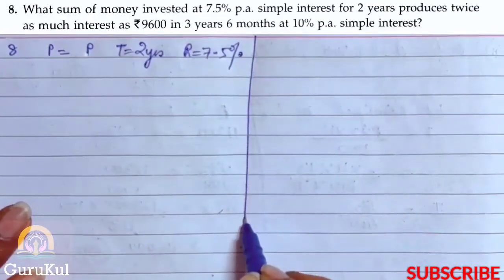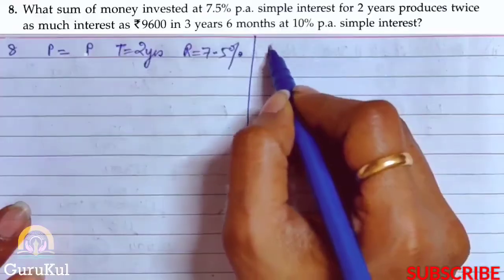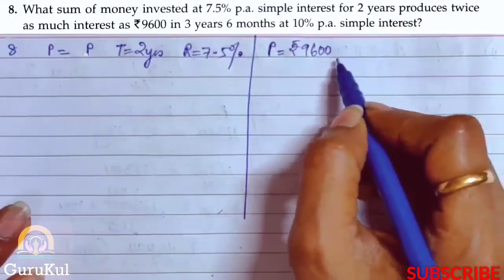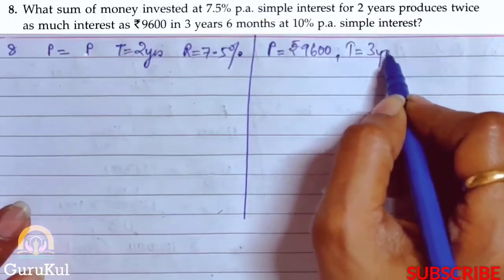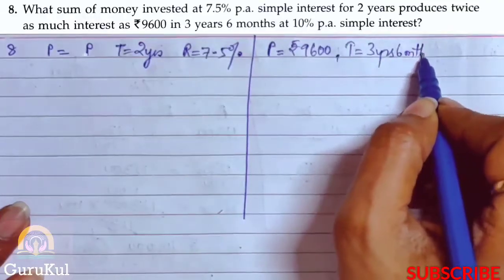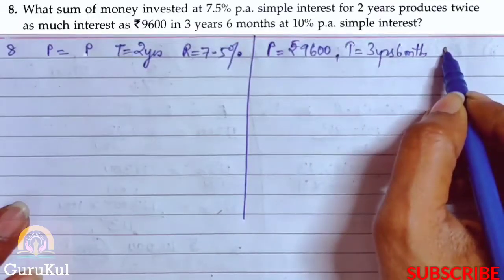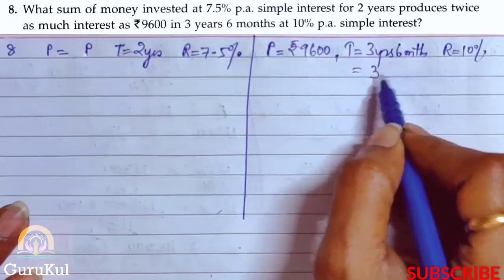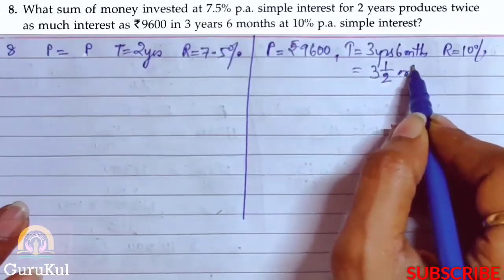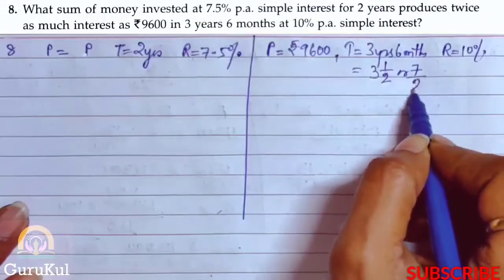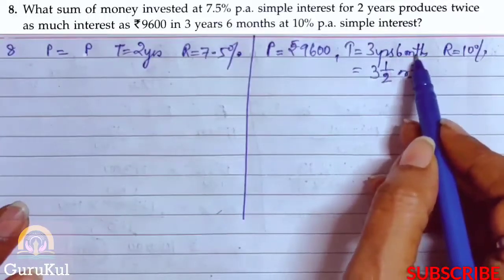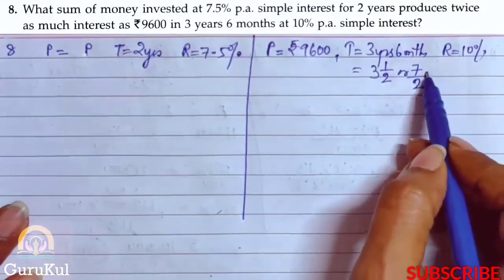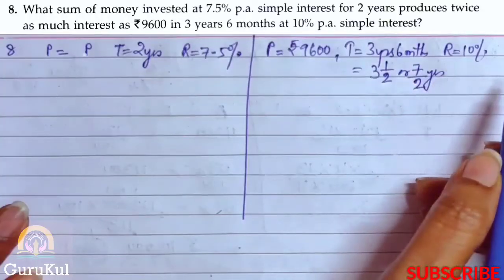In the second case, P = Rs. 9,600. Time = 3 years 6 months, Rate = 10 percent. Time becomes 3 + 1/2 = 7/2 years, because 6 months means 6/12, which reduces to 1/2. So time is 7/2 years.